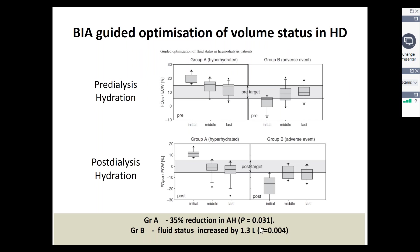This clinical study looked at two groups of patients: Group A who were overloaded, and Group B who had rather unstable dialysis with frequent hypotensive sessions. Over a nine-month period, three measurements were made. There was improvement in both the pre-dialysis hydration state and the post-hydration status in both groups. The study group reported a 35% reduction in antihypertensives, improvement in fluid status in Group B, and an increase in weight by 1.3 liters. Importantly, there was a 73% reduction in interdialytic adverse events, which is highly significant.